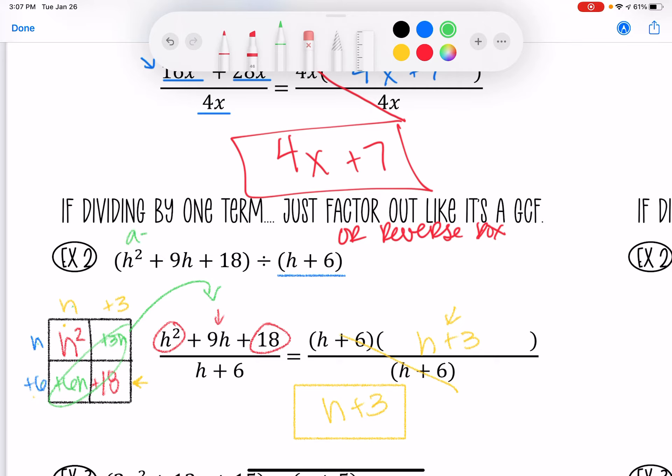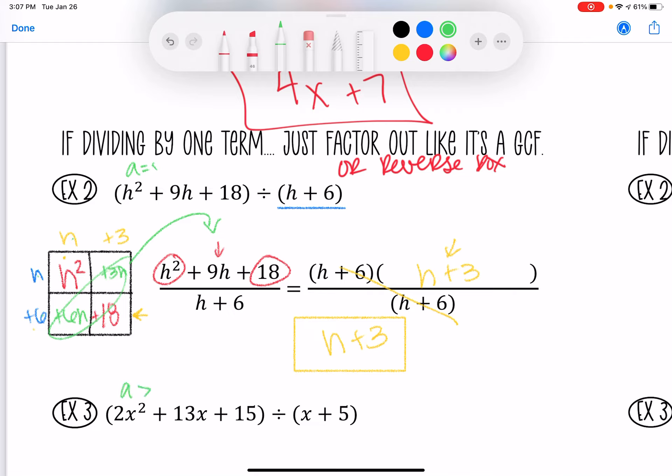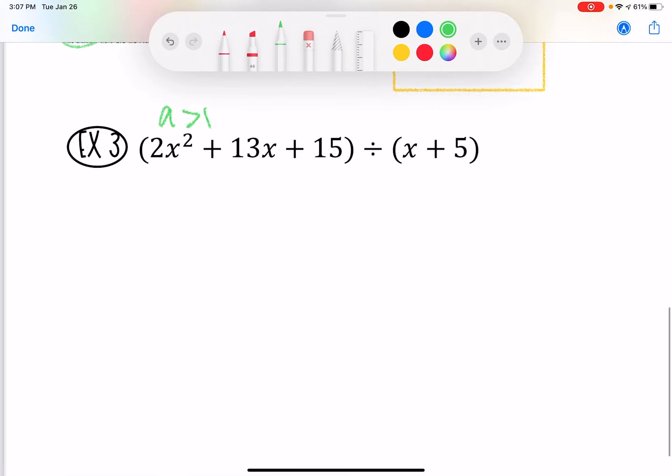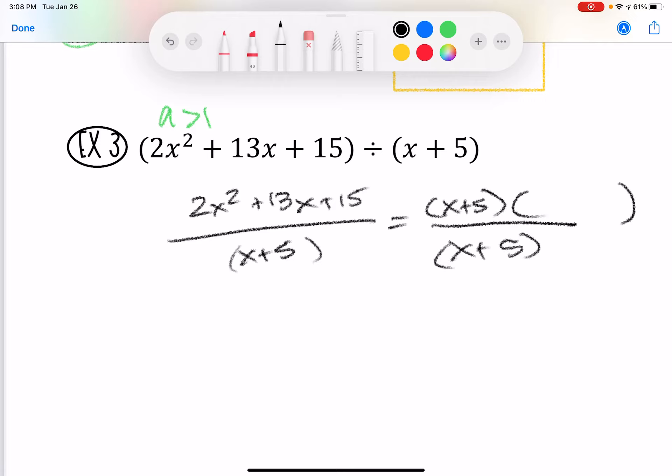And it doesn't matter if your A is 1 or if your A is more than 1. So, we're going to do the same setup. And if you want to write it out this way, so that way it helps you visualize what we're working with, that is totally fine. Just know we're going to have another binomial there and we know it's going to be a binomial because that exponent on my leading term is a 2. The degree of this polynomial is a 2. So, I know I'm going to need one more.